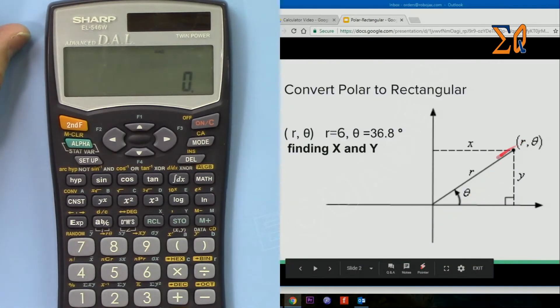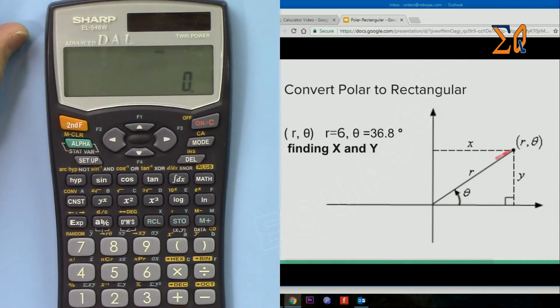Let's say you have a polar coordinate r equals 6 and theta is 36.8 degrees, and you want to find out the corresponding length of X, which is this length, and then the length of Y, which is here. So we will enter the value as r and comma theta.